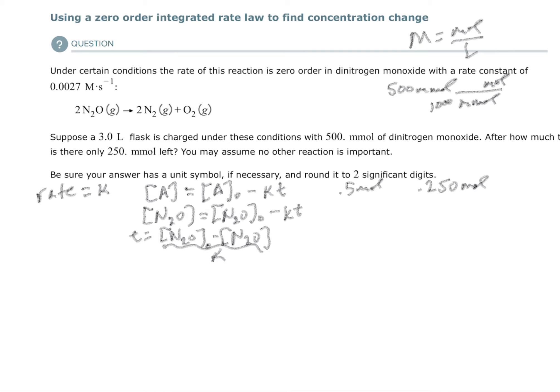Let's just start filling this in. The initial concentration is going to be 0.5 moles divided by 3 liters, and my new concentration is going to be 0.25 moles divided by 3 liters. So the first one is going to be—let me just divide this out—0.5 divided by 3.